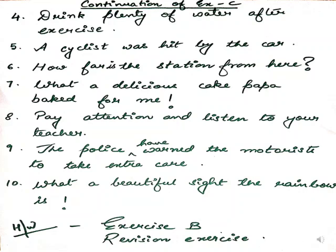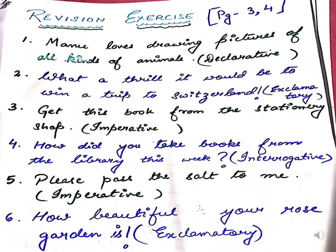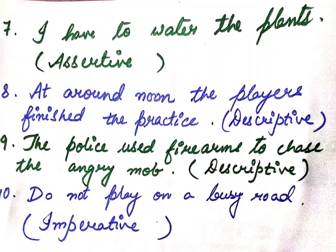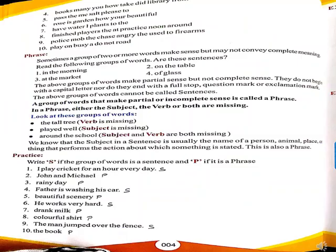In this slide you can see the continuation of Exercise C, Exercise B, and a revision exercise as homework. Here are the answers of the revision exercise given on page numbers 3 and 4 — you can go through it and correct on your own. This is page number 4 from your book, Chapter 1. Here you have to mention S for sentence and C for phrase, as done in the practice part.